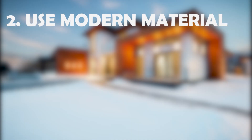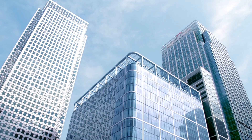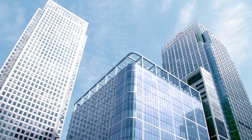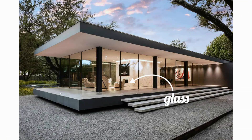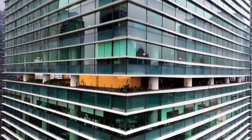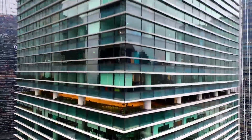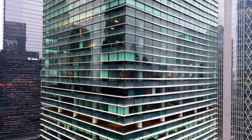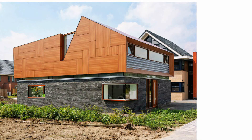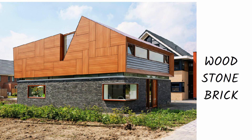Use modern materials. Incorporate materials that are commonly associated with modern design, such as glass, metal and concrete. These materials can be used to create a sleek, minimalist look that is both stylish and functional. However, you can also use natural materials like wood, stone or brick to create a mix of texture and warmth.